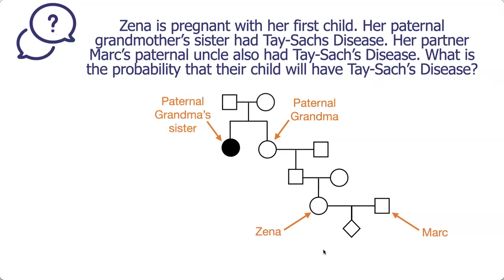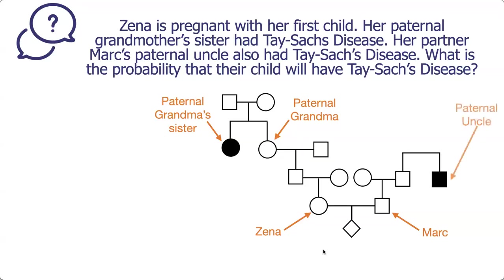We draw the parents of the grandmother's generation. Jumping over to Mark's side, these are Mark's parents. Mark's paternal uncle — his dad's brother — also had Tay-Sachs, so the paternal uncle is shown shaded because he is affected with the trait. We then show their parents as well.